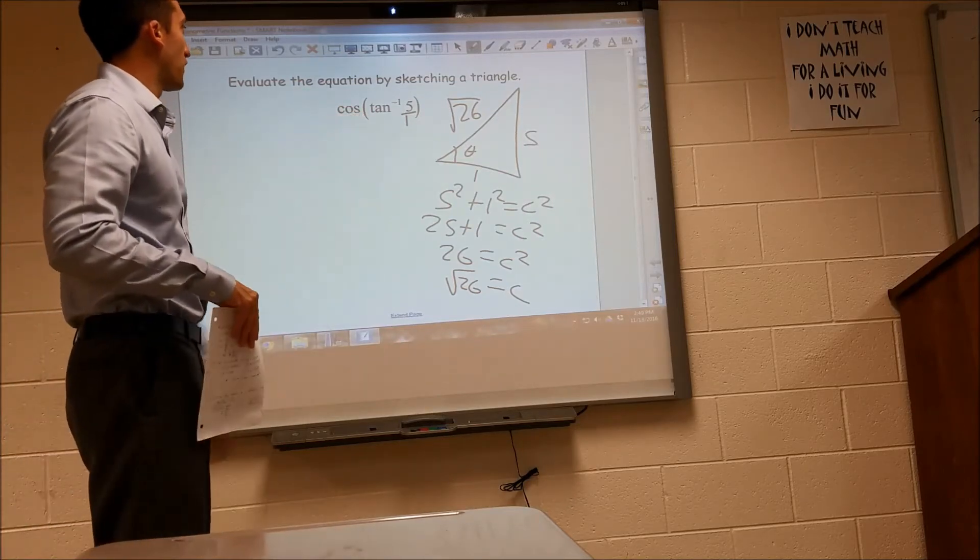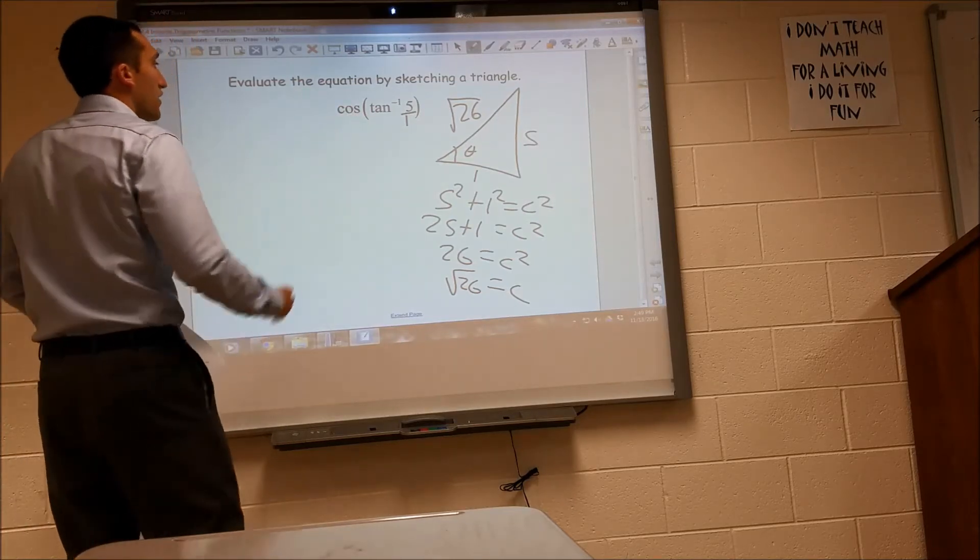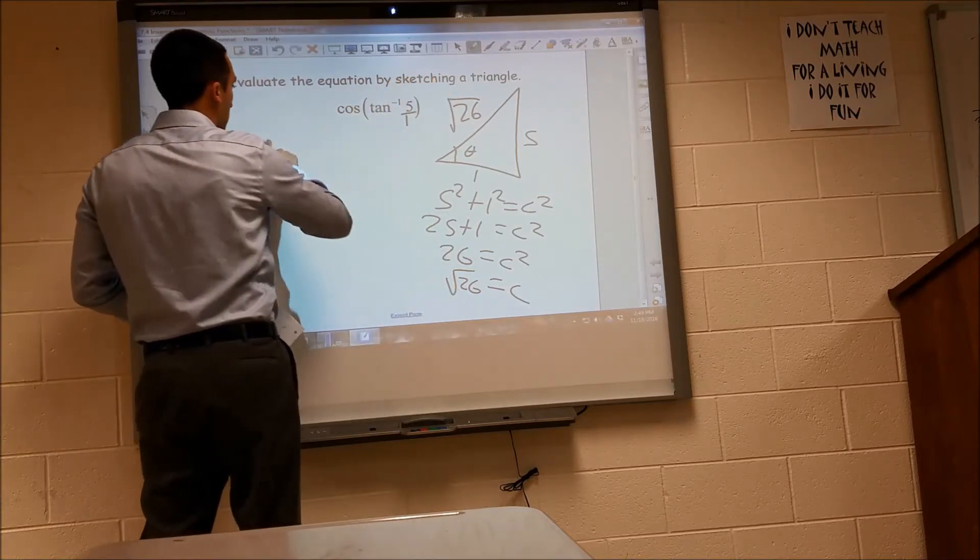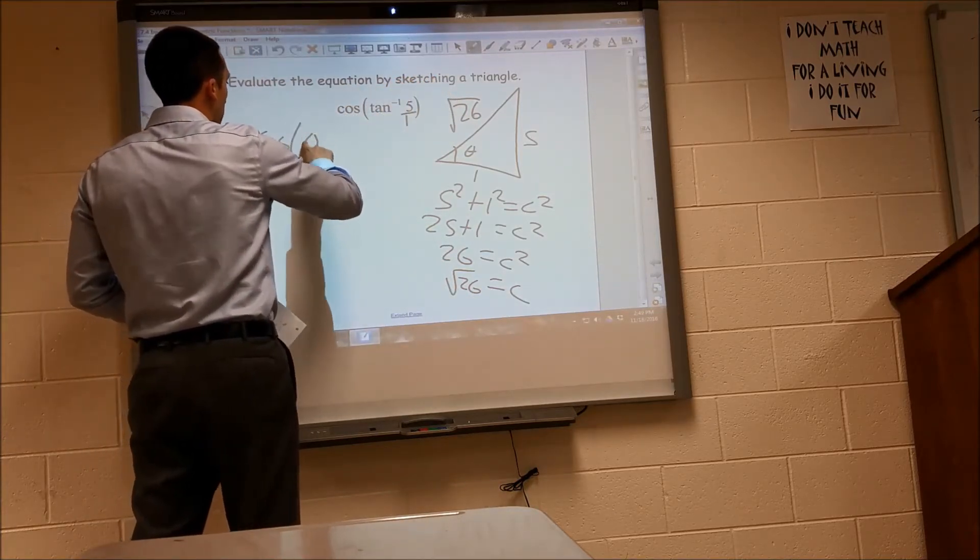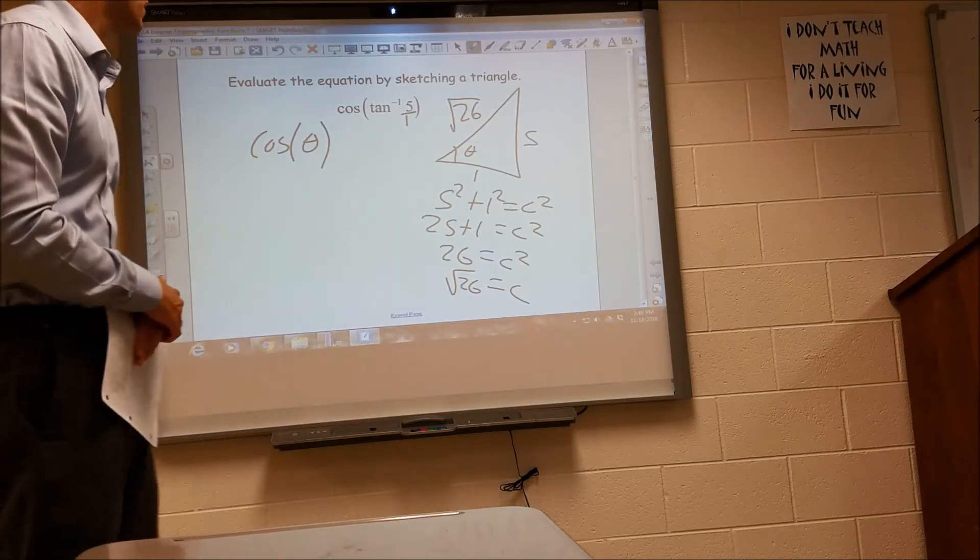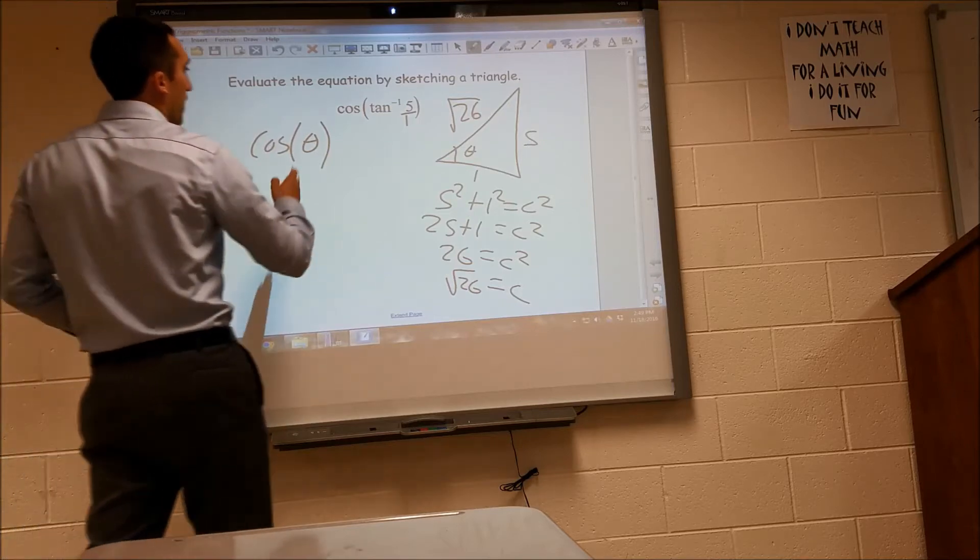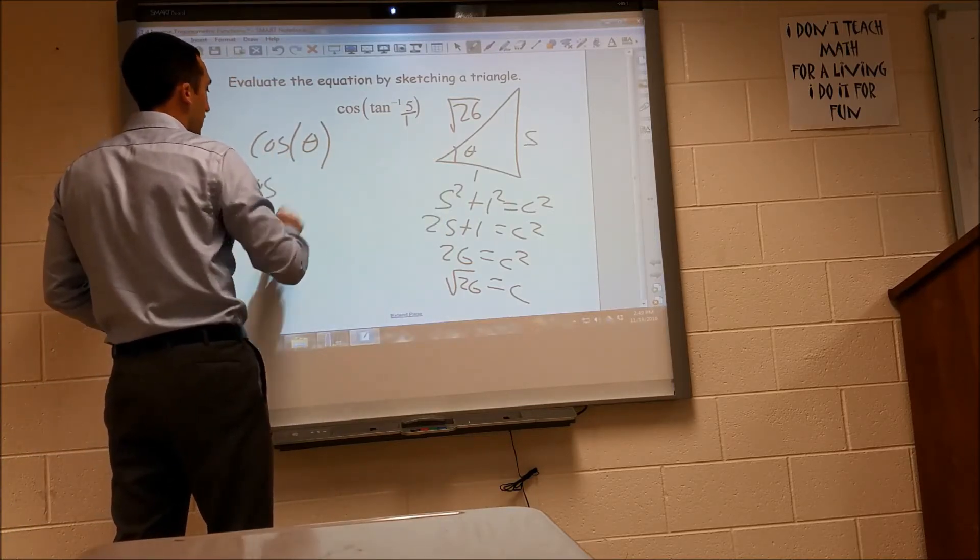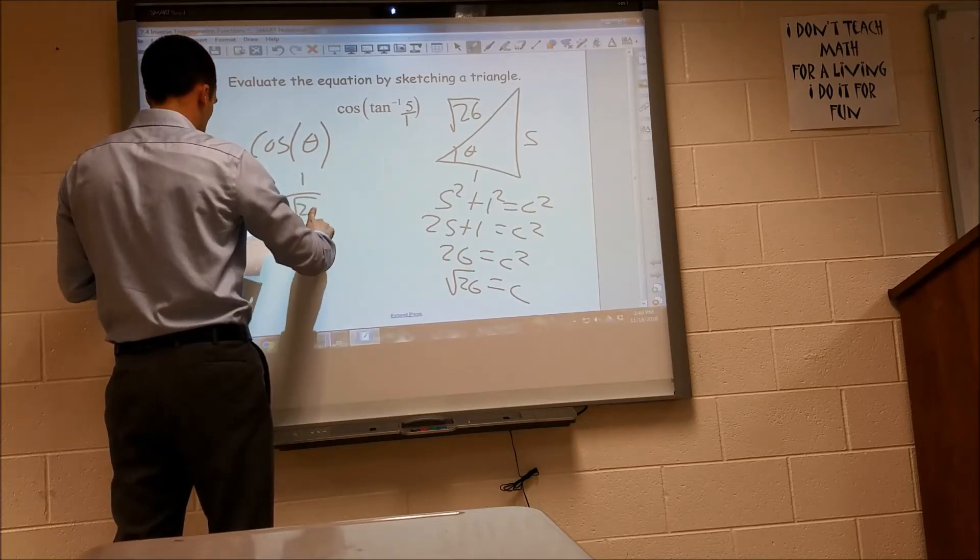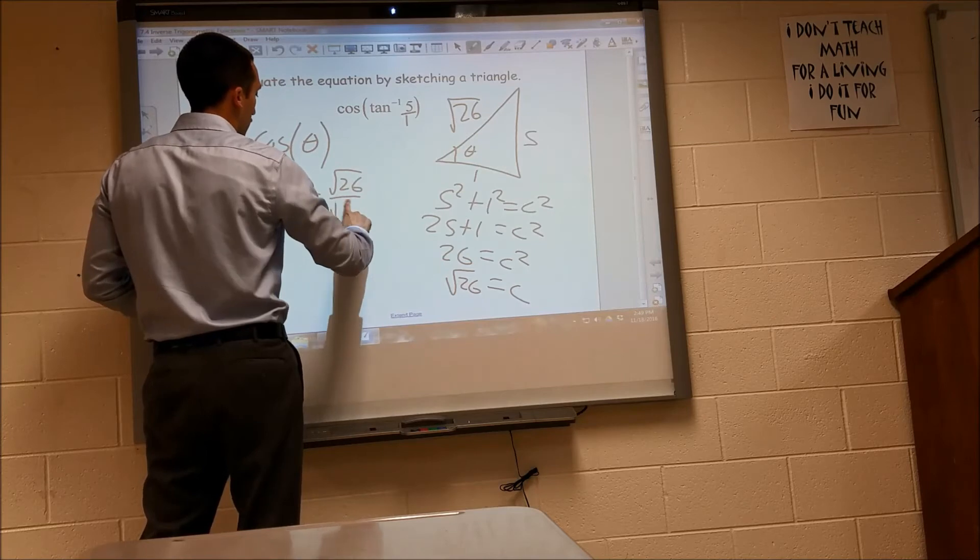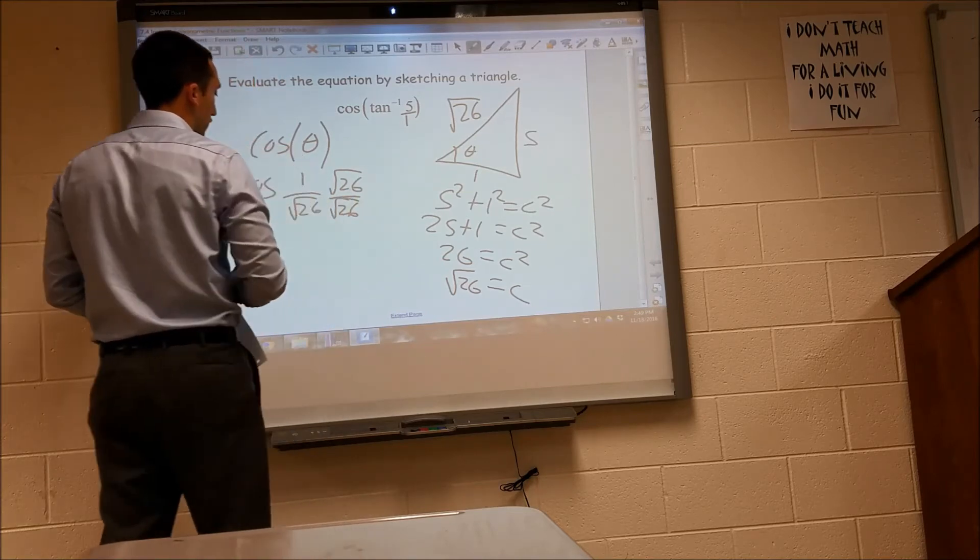Now I'm going to go ahead and solve my equation. The tangent inverse of 5 is, again, cosine of then theta. I don't know what theta is, but I'm not worried because I'm really looking for the cosine. I'm not looking for the angle. So cosine of theta is adjacent over hypotenuse. So the cosine is 1 over square root 26. And if you rationalize that, radical 26 over radical 26.